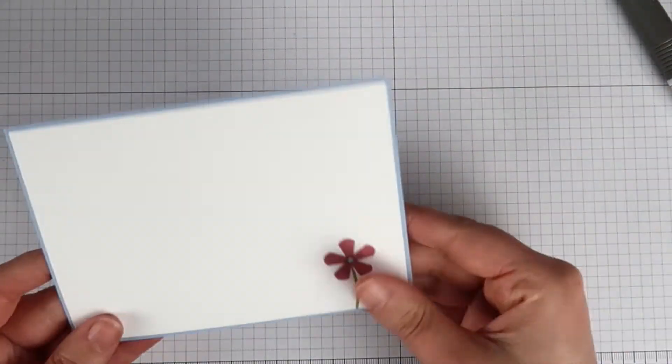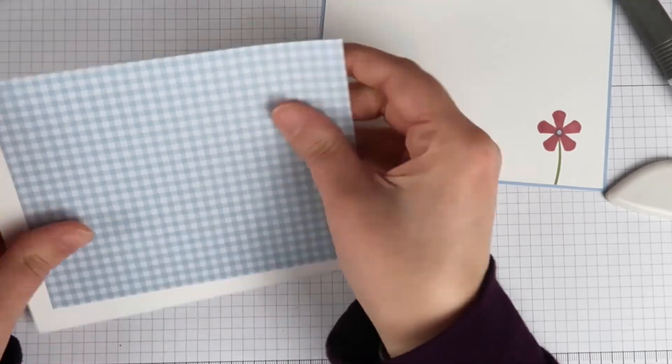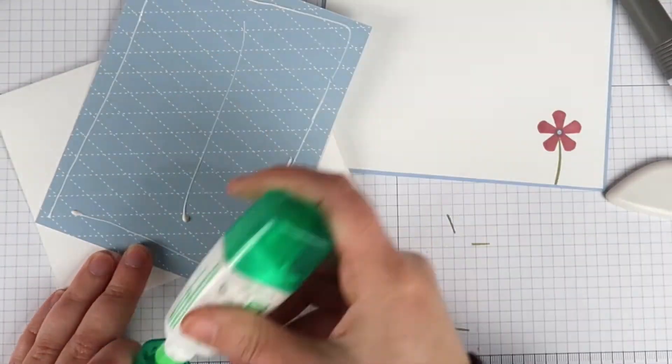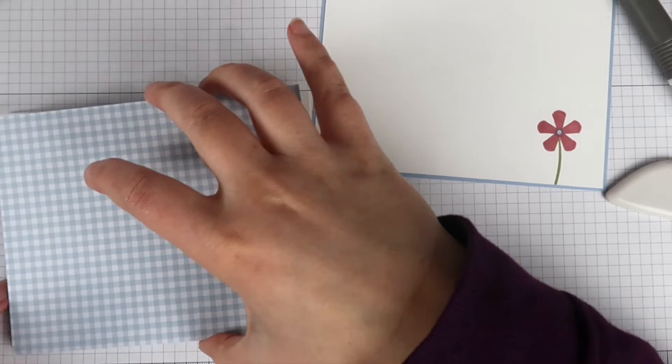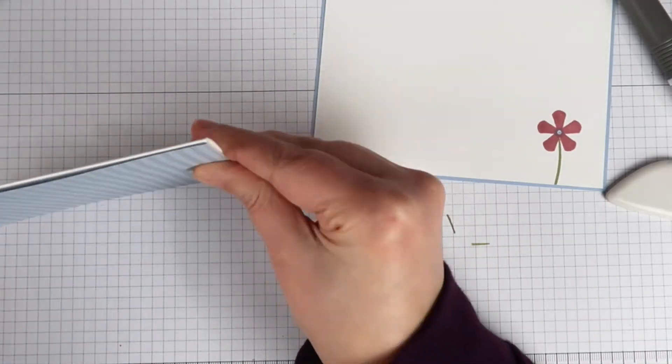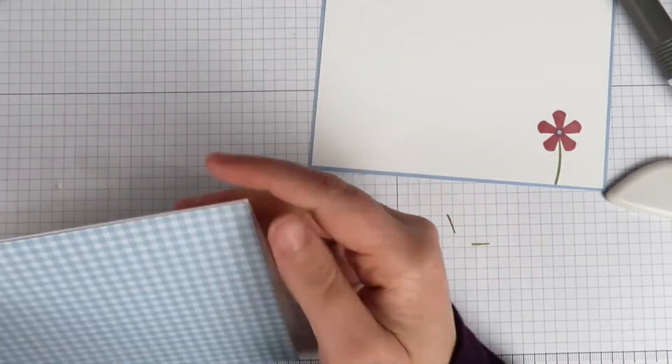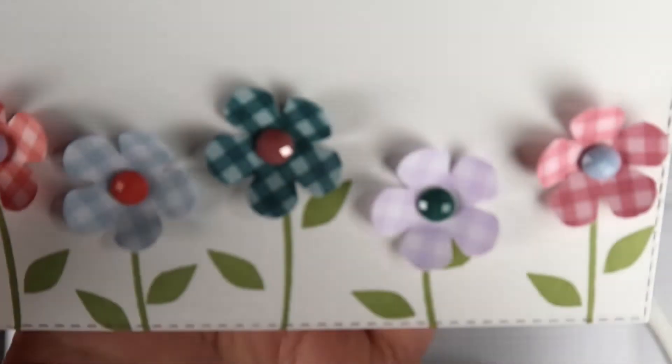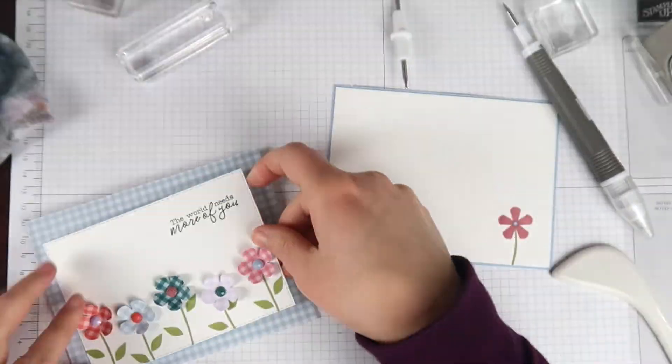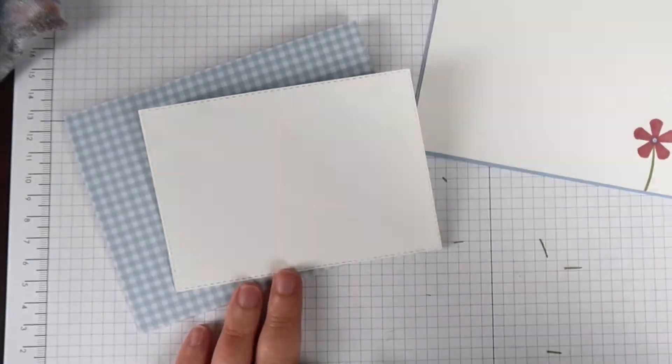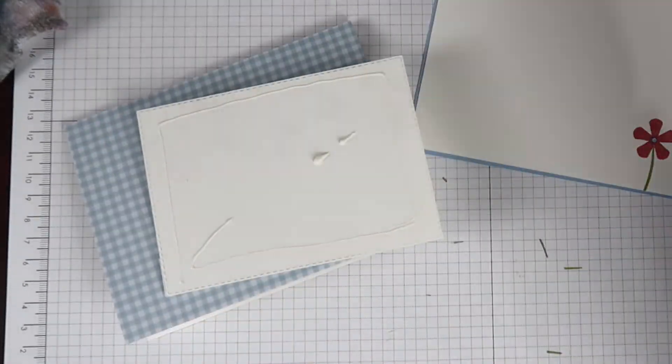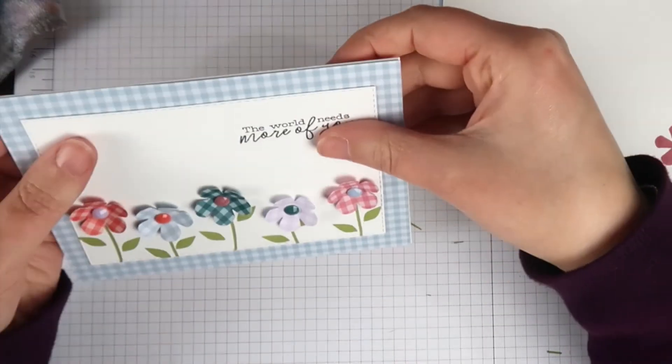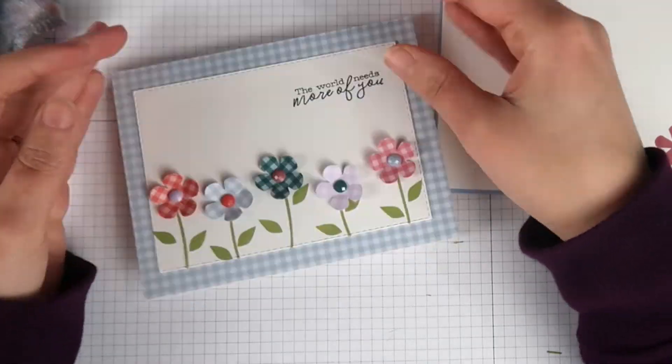Now for the outside of my card, I have cut a panel that's the size of an A2 card to go on the front of my card. I'm using the Seaside Spray color from my six by six paper pack and then I'm just going to grab my card panel. Because I already have so much dimension with the flowers themselves, I'm just going to glue this directly onto the card panel.